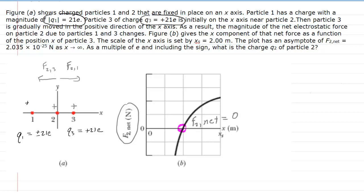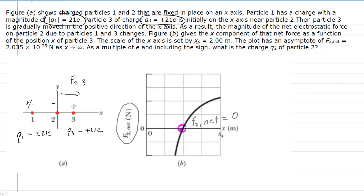Now of course this analysis all hinged on our assumption that particle 2 was positive. We can take a quick look at what would happen if we assumed that particle 2 were negative — and as we will see, we get the same conclusion that particle 1 is indeed positive. If particle 2 were negative, there would be an attractive force between negative particle 2 and positive particle 3, giving a force F2,3 pointing to the right. The graph suggests F_net on particle 2 equals 0, so there has to be a force going to the left — and the only way is if particle 1 were positive, attracting negative particle 2 to the left. So regardless of whether particle 2 is positive or negative, we conclude that particle 1 is positive.